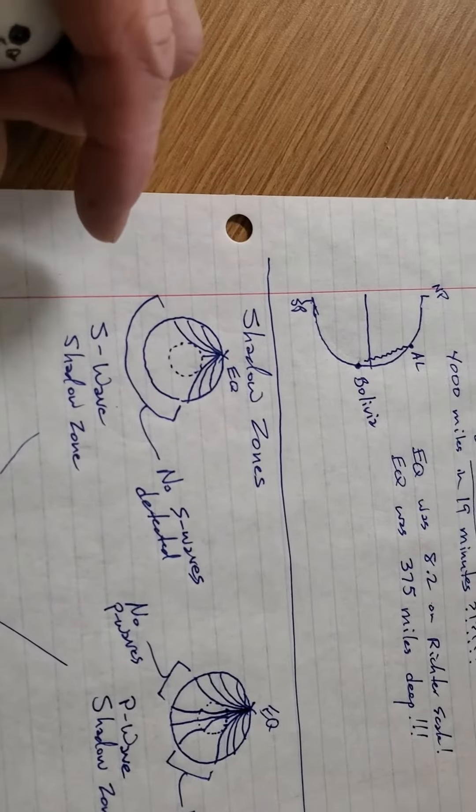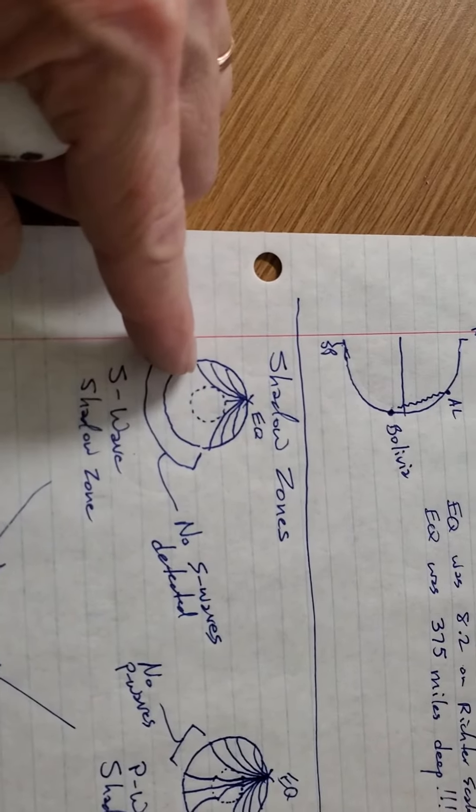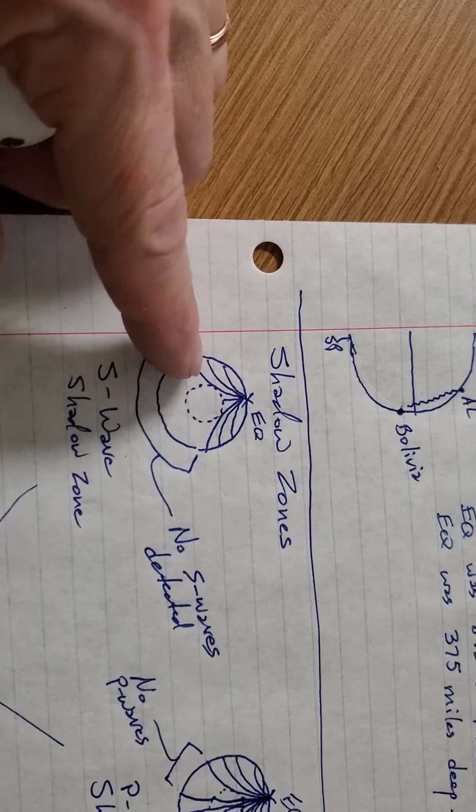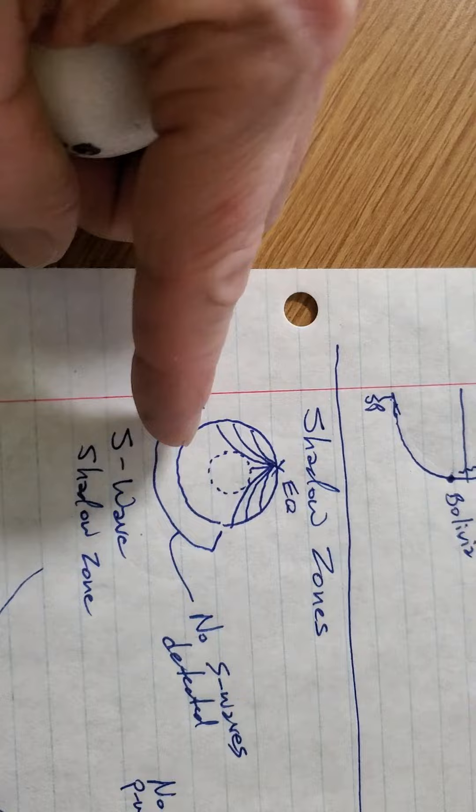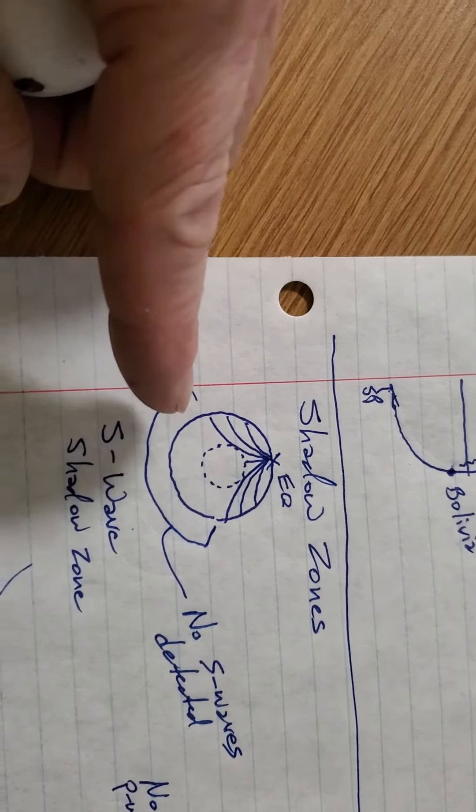The Earth's core is able to block S-waves. They can't travel through the liquid outer core, so when they meet the core, everything below there, here, is blocked.